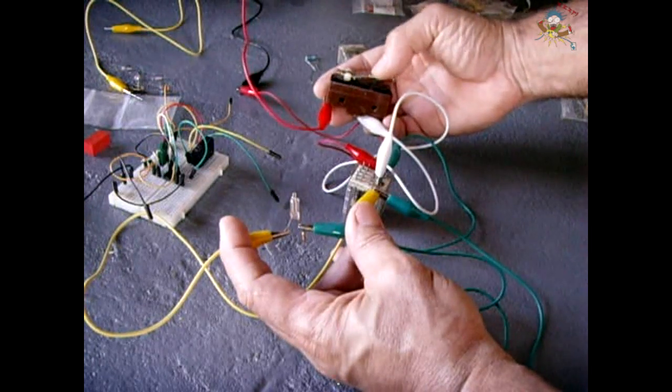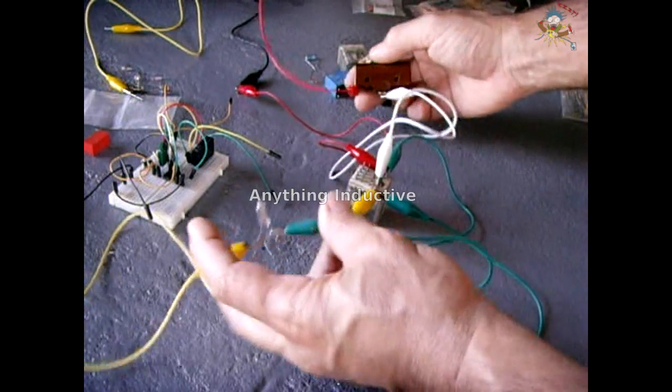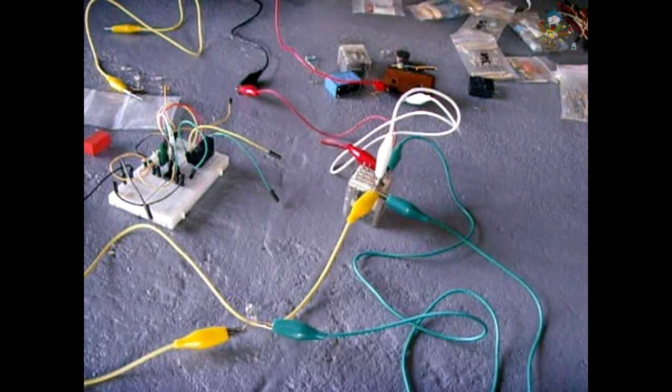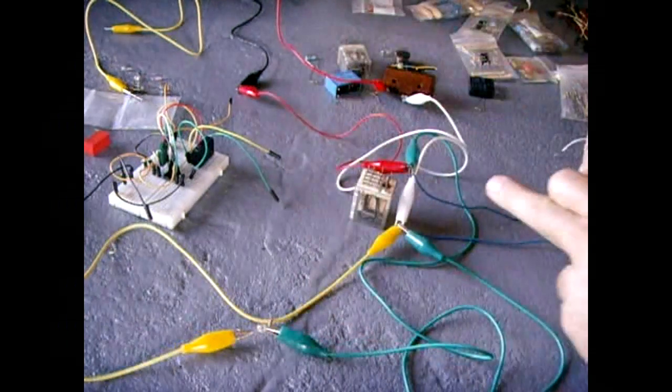Now it doesn't have to be a relay coil. I'm going to take the relay coil away and use the windings of a transformer. We're going to take this right here. I'm going to use the blue wires.